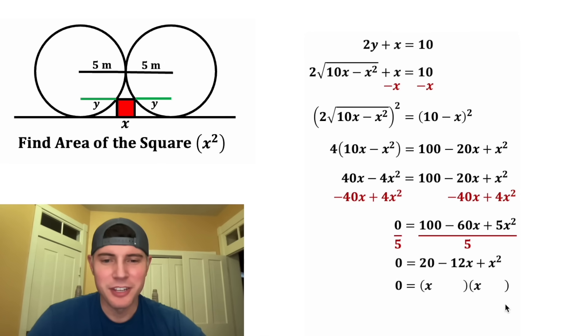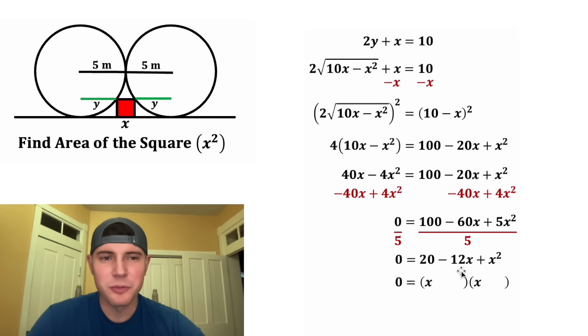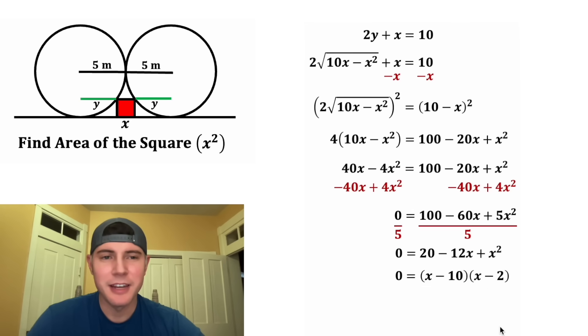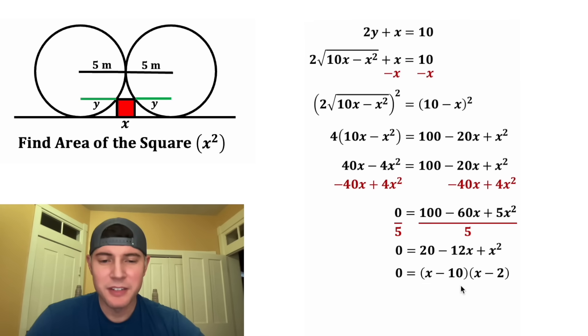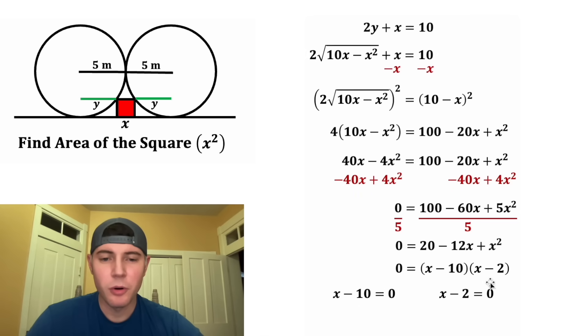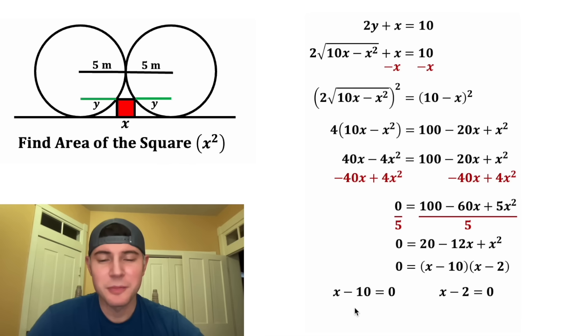And then we can factor this. We need two numbers that add to negative 12 and multiply to positive 20. Well, that's going to be negative 10 and negative 2. So we have X minus 10 times X minus 2 equals zero. That means that either this equals zero or this equals zero. So for X minus 10 equals zero, we can add 10 to both sides, and we get X equals 10. What we can see right here, since the radius is five, there's no way that X is 10. So this is not a valid solution.